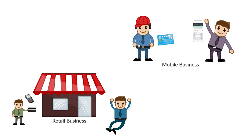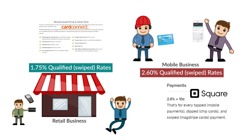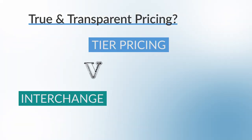Other variables include your average ticket size, total processing volume, and the gateway you're using. If you're a retail or mobile merchant where the card is physically present, and you have reasonable volume, you probably don't want a flat rate program with a minimum of 2.60% when a tier-based or interchange plus program could give you rates over a full percentage point lower. On the other hand, the no-monthly-fee model of Square may appeal to startups or seasonal businesses.